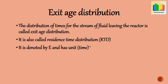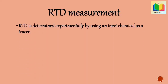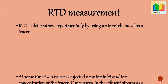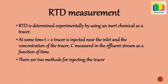Next question: how is RTD measured? RTD is determined experimentally by using an inert chemical as a tracer. At time t equals zero, the tracer is injected near the inlet, and the concentration of the tracer C is measured in the effluent stream as a function of time. There are two methods for injecting the tracer: the first is pulse input, and the second is step input.